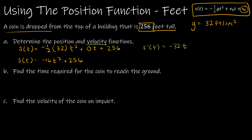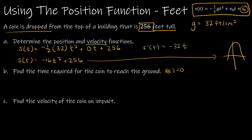Now we're asked to find the time required for the coin to reach the ground — this is just a matter of translating words into math. When the coin reaches the ground, the position must be zero. Keep in mind the position function looks like an upside-down parabola, so we'll get two solutions: one negative and one positive. You should find both, but only the positive one makes sense in context.